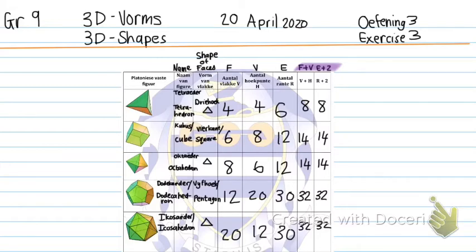First, we need to name all of the figures. The first is a tetrahedron — that's the one with four faces. The shape of the faces are all triangles. The vertices are four, the edges are six, and when I add the vertices and faces I get eight, and edges plus two also gives eight.